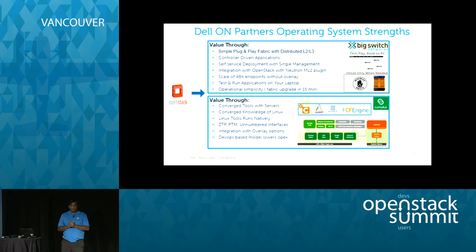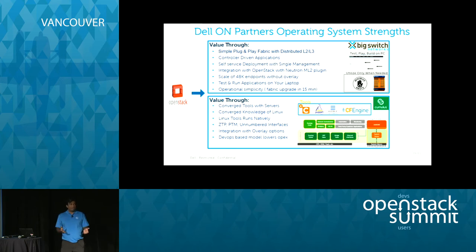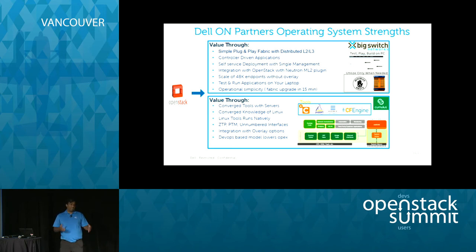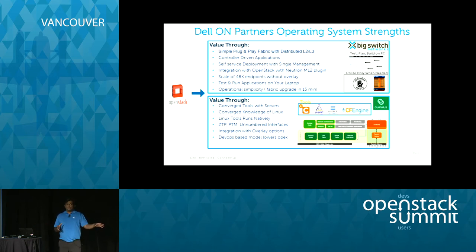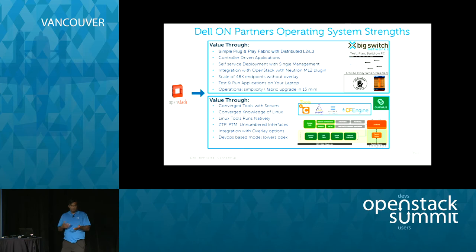The other partner is Cumulus Networks, with a very simple message: OpenStack heavily relies on Linux, and if your sysadmins are familiar with Linux and using Linux tools, just extend it to the switch. Use the same provisioning, management, and troubleshooting tools that you use with the rest of your Linux devices and extend them to the switch as well. Because Cumulus is a pure Linux OS, it works with all the Linux tools you already use. They also integrate with overlay partners like Midokura, PlumGrid, Nuage, and others.